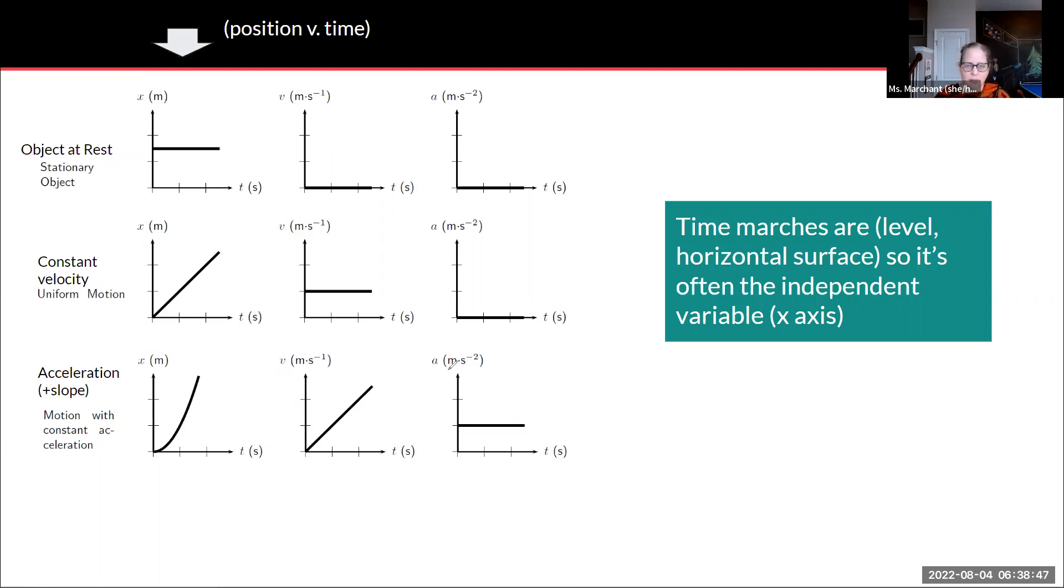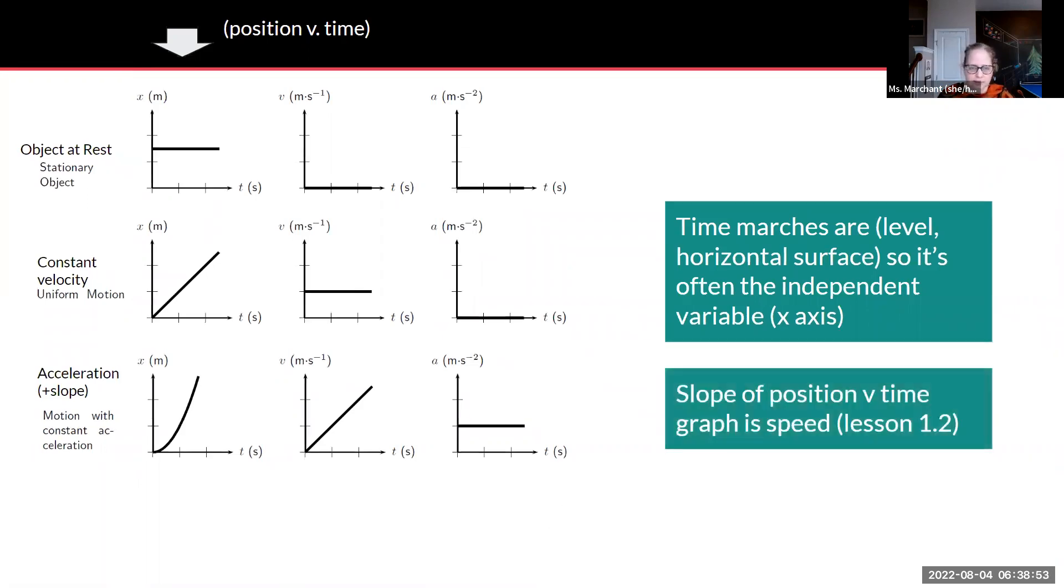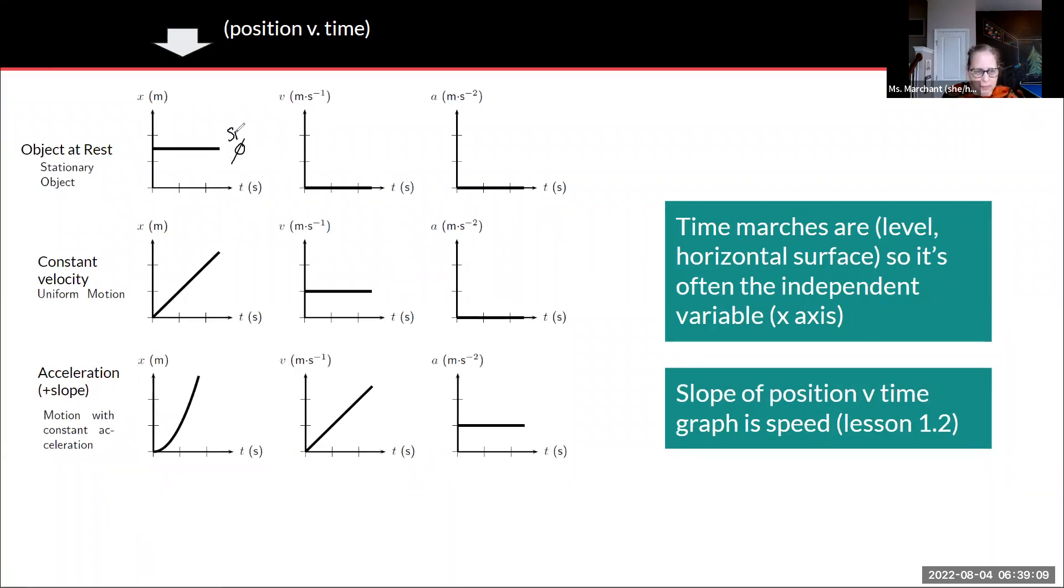So what else can we get from this graph? If we take the slope of it, we get speed. So this one here is labeled as object at rest, but you would actually know that this is a horizontal line, so the slope is zero, and the speed is zero. Does that make sense? Yes, because we are at the same meters away each time, so whatever this is, 1.5 or 50, doesn't matter. That distance away from the origin is not changing, so the object is at rest, which just means not moving or stationary.